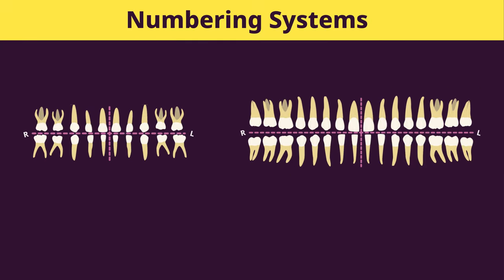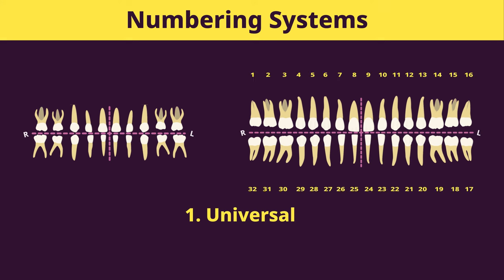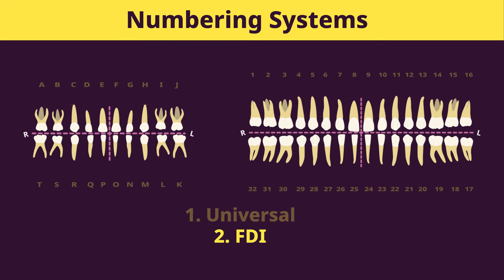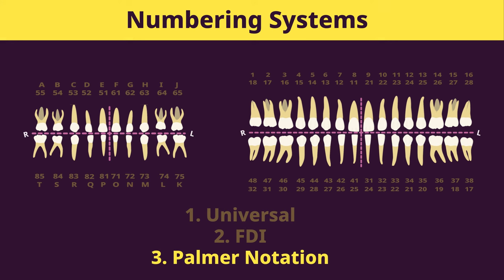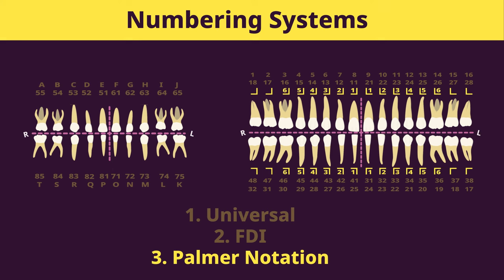So you now know the three different numbering systems. The Universal Numbering System, which assigns a number one through 32 for each of the permanent teeth and a letter A through T for all the primary teeth. The FDI Numbering System, which assigns two numbers to each tooth — the first to indicate the quadrant (one through eight) and the second to indicate the position from the midline (one through eight for permanent teeth and one through five for primary teeth). And the Palmer Notation System, which assigns a symbol and a number or letter to each tooth — a symbol for the quadrant and a number one through eight for permanent teeth, or a symbol and a letter A through E for primary teeth.